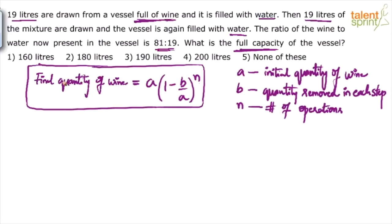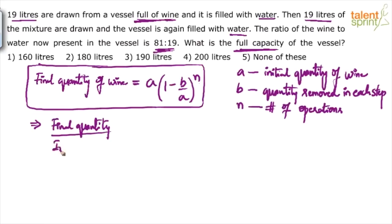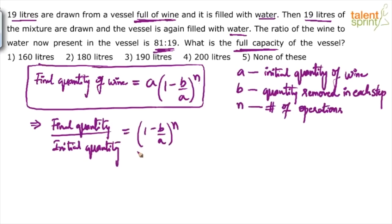Instead, we have been given the ratio of wine to water now present in the vessel. So if I take 'a' to the denominator on the left hand side, I get: final quantity divided by initial quantity equals (1 minus b over a) to the power of n. This is a modified form of the formula. The ratio given to us is wine to water equals 81 to 19.